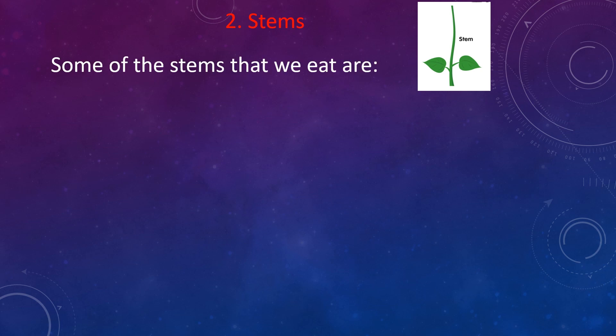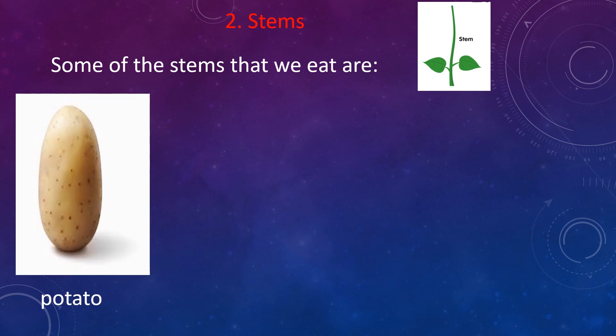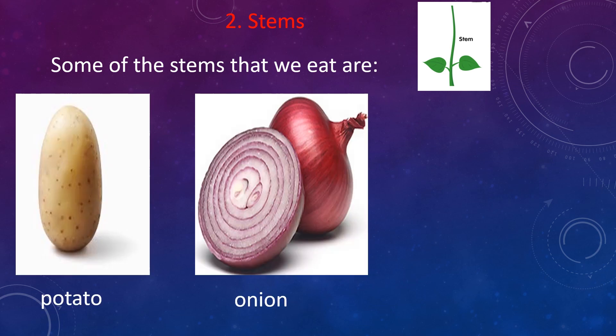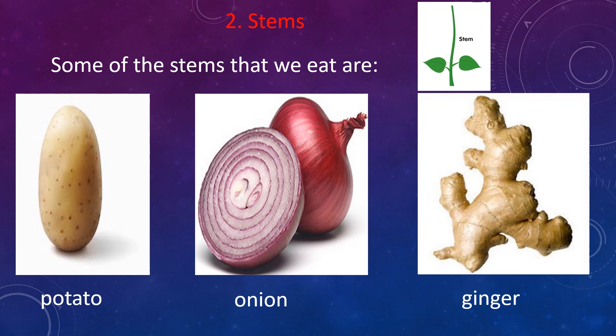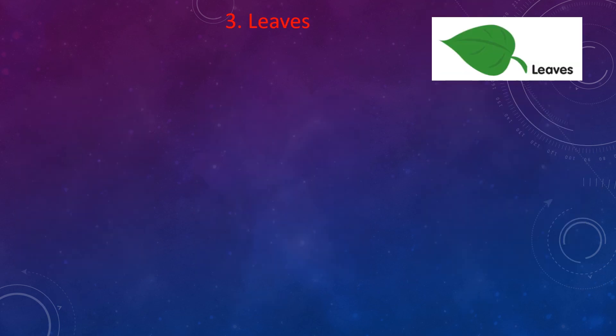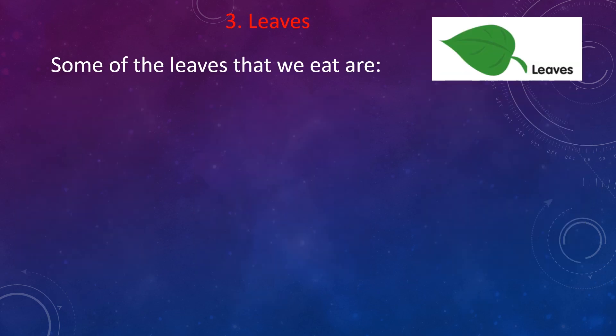Now let's see which are the stems that we eat. Some of the stems that we eat are potato, onion, and ginger. So potato, onion, and ginger are the stems that we eat — there are many more, but we are learning about these.